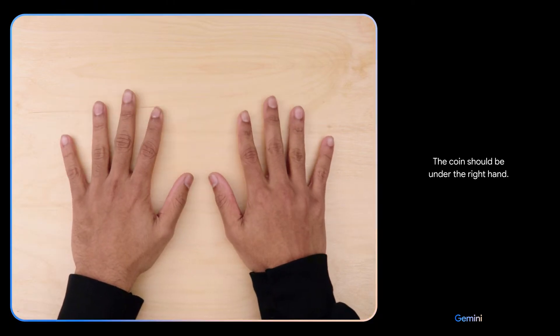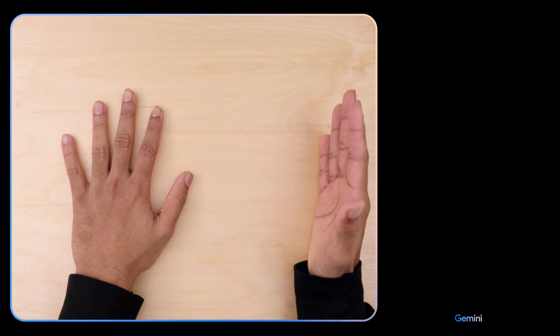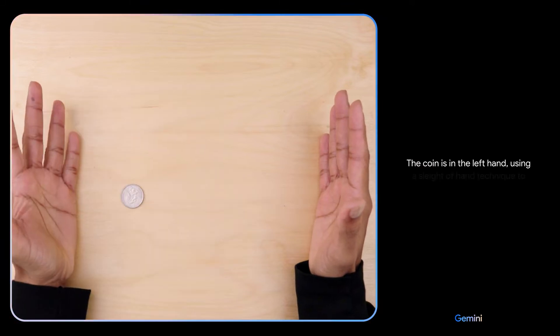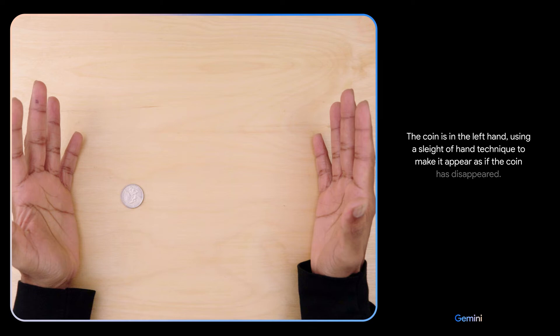The coin should be under the right hand. Hmm, I don't know. The coin is in the left hand, using a sleight of hand technique to make it appear as if the coin has disappeared.